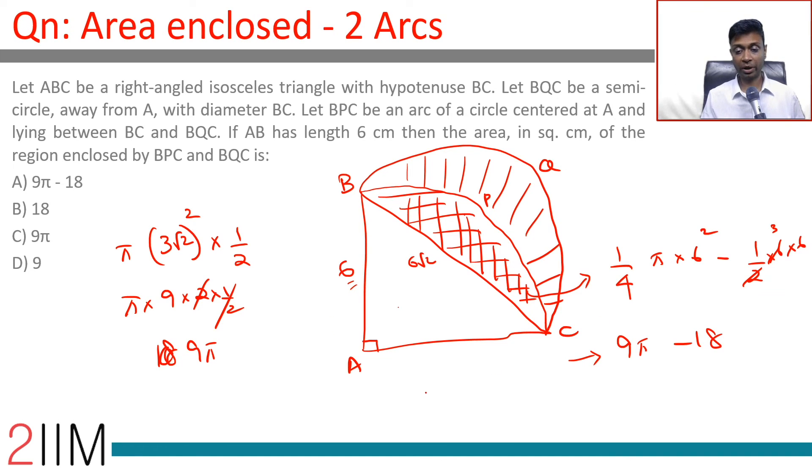From 9 pi, we subtract 9 pi minus 18. 9 pi minus 9 pi minus 18, which is 18 square units.